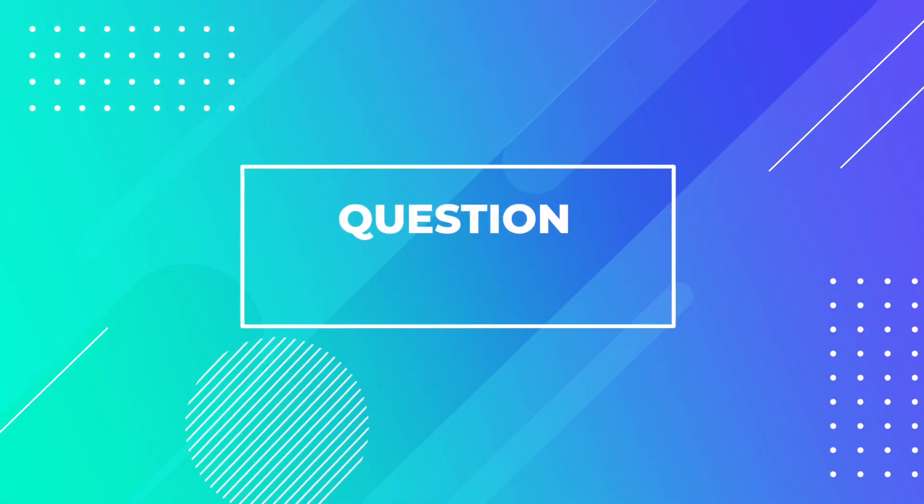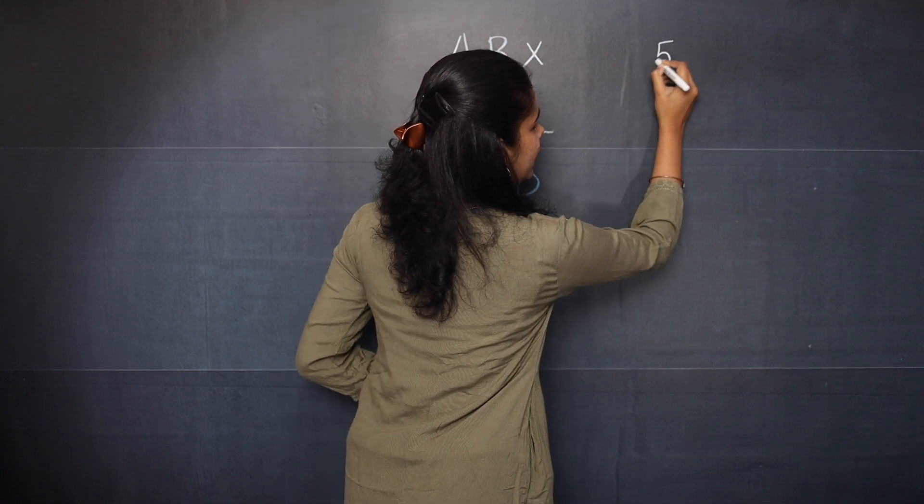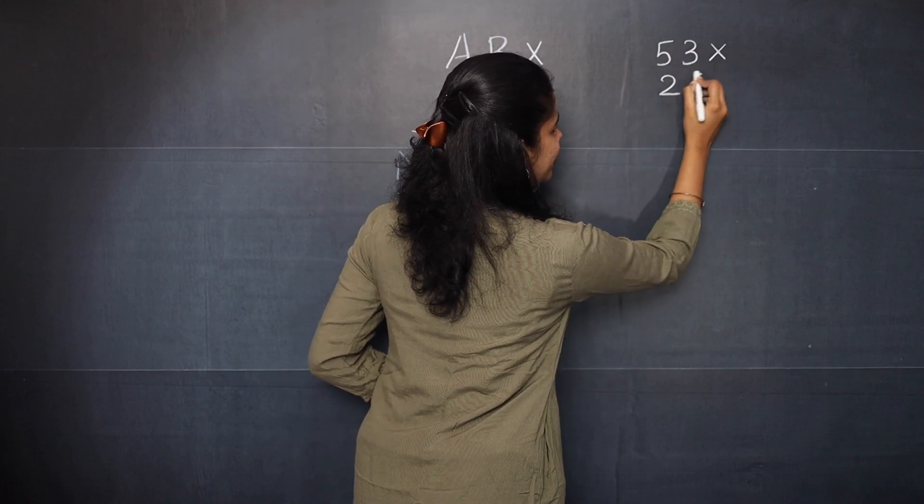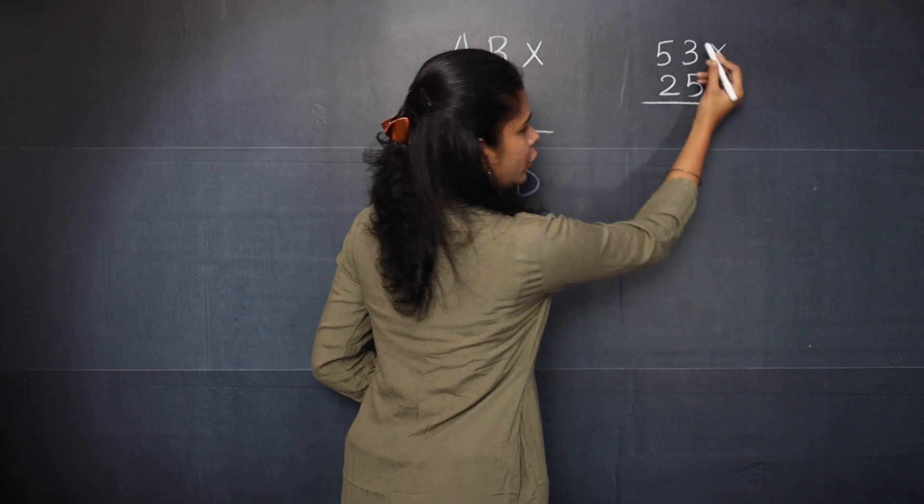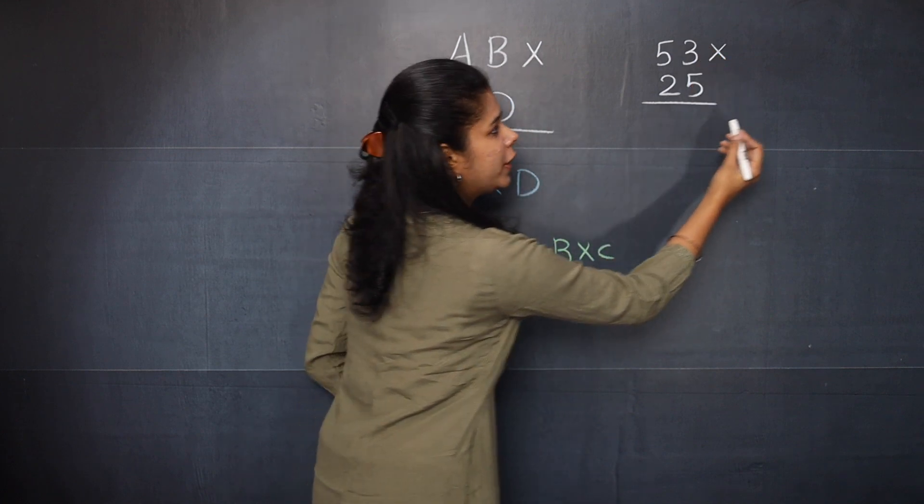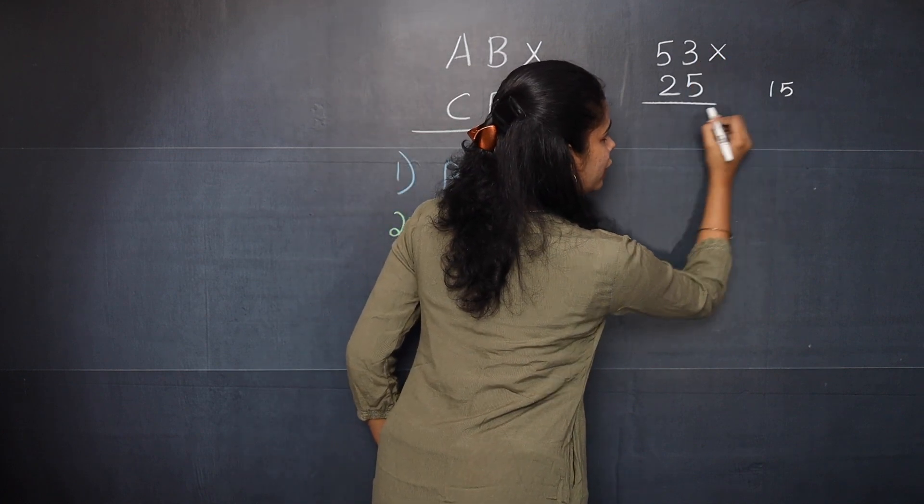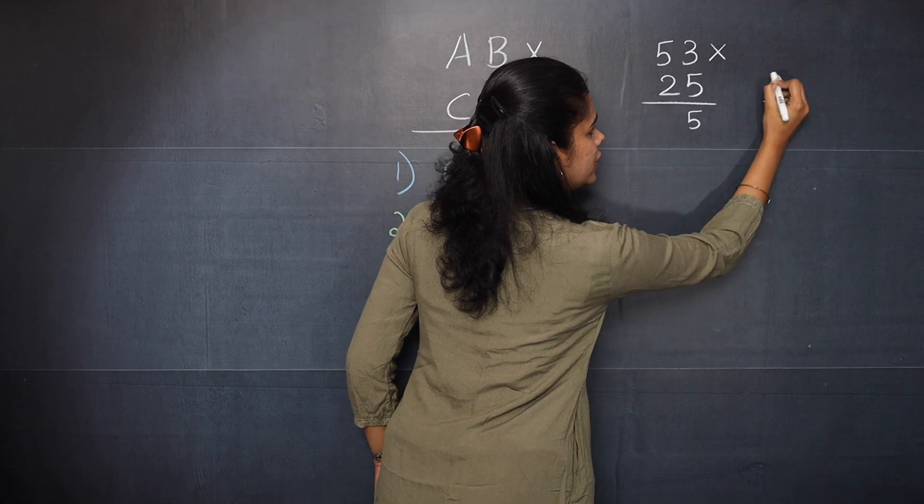Now let's move on to the next question. 53 multiplied by 25. So here you need to multiply 3 and 5. You will get 15. So you will write 5 here. And 1 is your carry over.